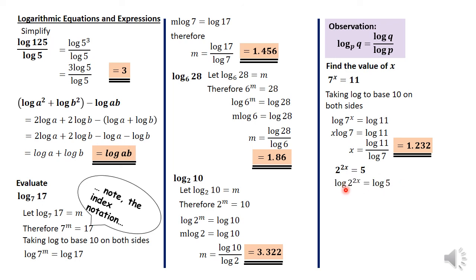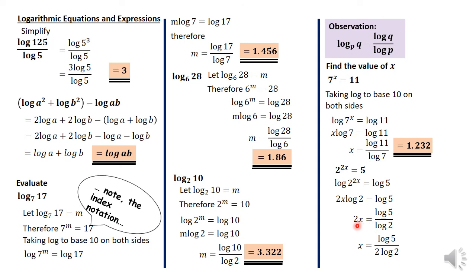The last question: 2 raised to the power 2x is equal to 5. Take logarithm to base 10 on both sides, bring 2x before log 2, and equate that to log 5. Divide both sides by log 2, and then divide both sides by 2 so that your answer will be x equals log 5 divided by 2 log 2. The answer therefore is 1.161.